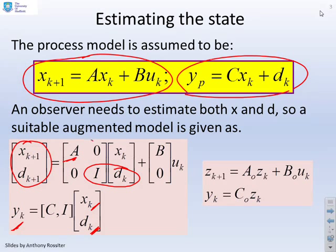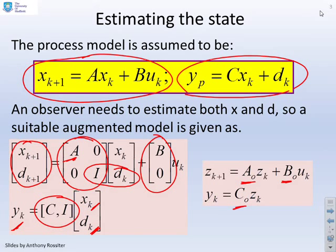And what I'm going to do is call the augmented A matrix A0, augmented B matrix B0, and the augmented C matrix C0. And the augmented state we'll call Z. So this observer has got a state Z.